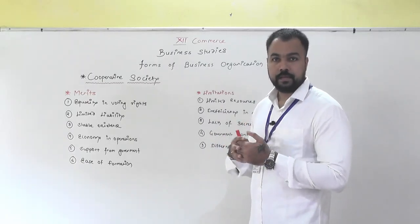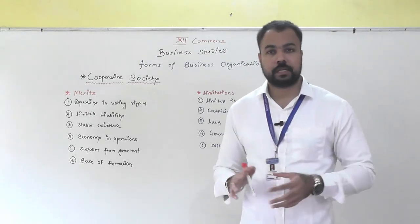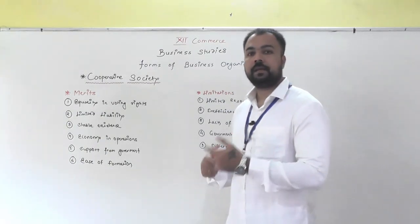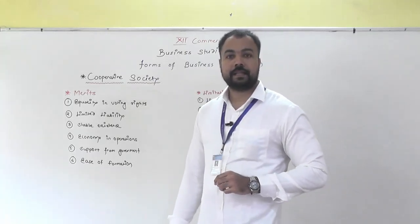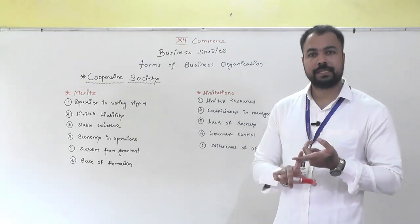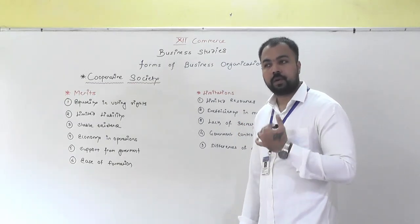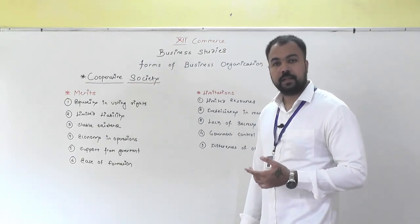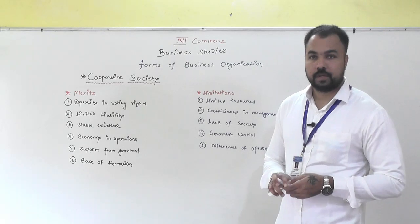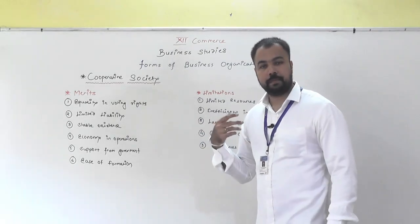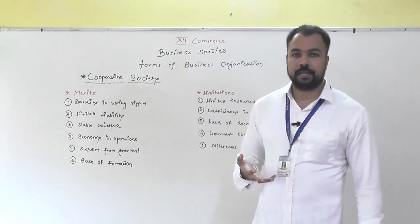In a partnership firm, if there's retirement or death, you have to shut down the existing partnership firm and re-register a new partnership. But in a cooperative society, even if one member dies or retires or new members are added, the society continues without any disruption. The society's existence remains stable.